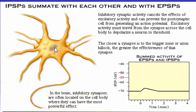In the brain, inhibitory synapses are often located on the cell body where they can have the most powerful effect.